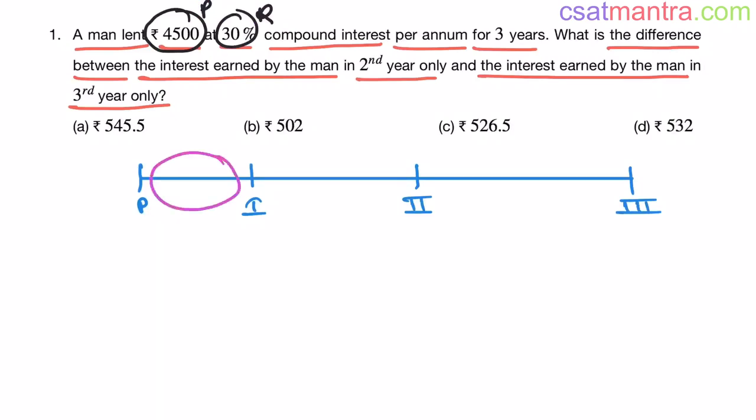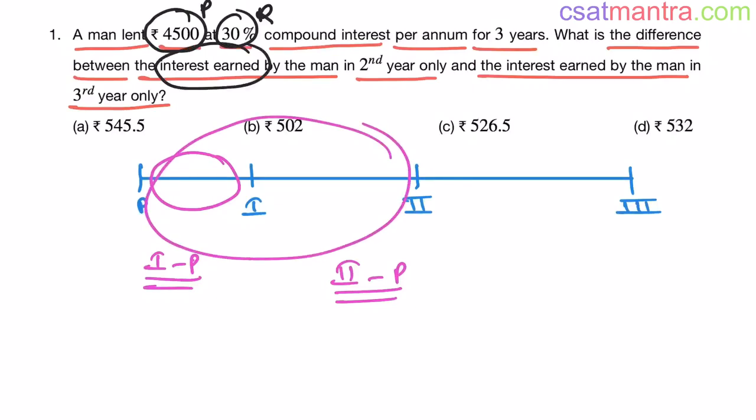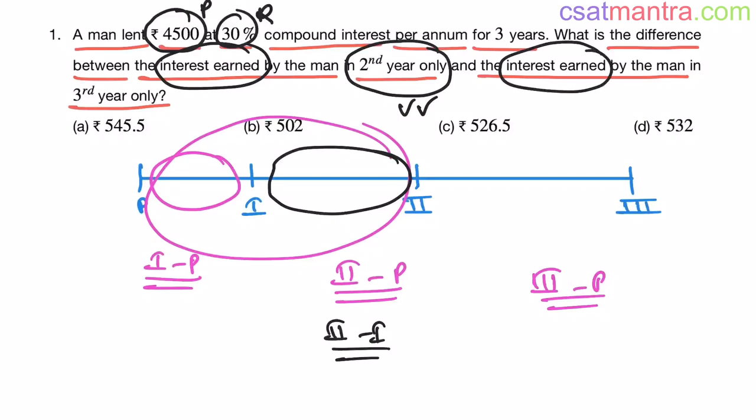Now, this difference is the interest earned for 2 years, my friends. But here we are asked interest earned by the man in 2nd year only. That means this difference, my friends. II minus I. This is the interest earned by the man in 2nd year only. Now, III minus P will be interest earned for 3 years. Now, what about the interest earned by the man in 3rd year only? That is this difference, my friends. That is III minus II.